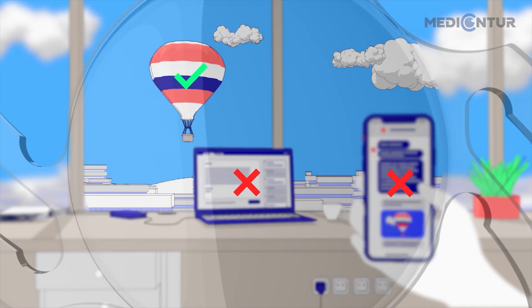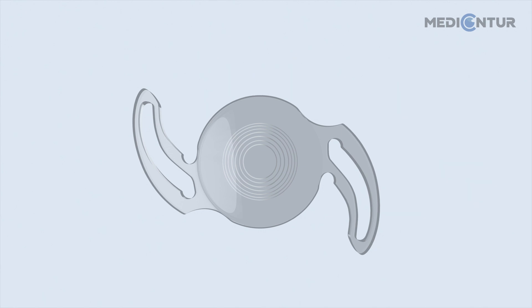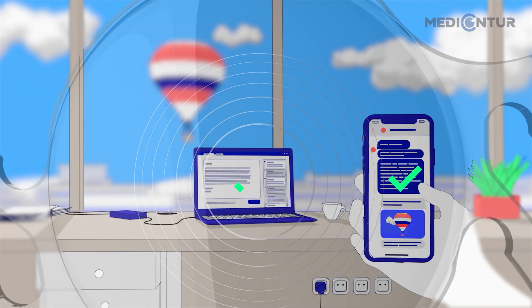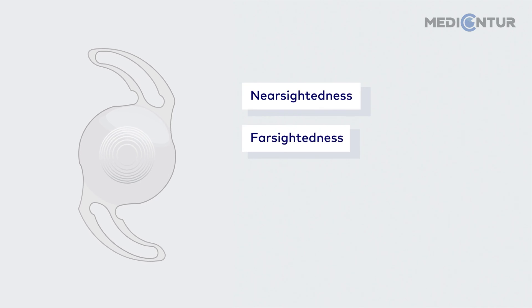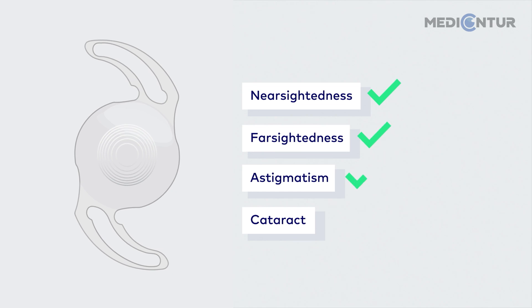Recent advances in manufacturing and measurement technology have given rise to a new generation of IOLs. With a unique concentric pattern at the middle of the optic, these so-called trifocal lenses are designed to enable sharp vision at near, intermediate, and far distances, therefore providing more spectacle independence. Trifocal IOLs have the ability to correct the conditions of near or far-sightedness, astigmatism, and cataract, all at the same time.